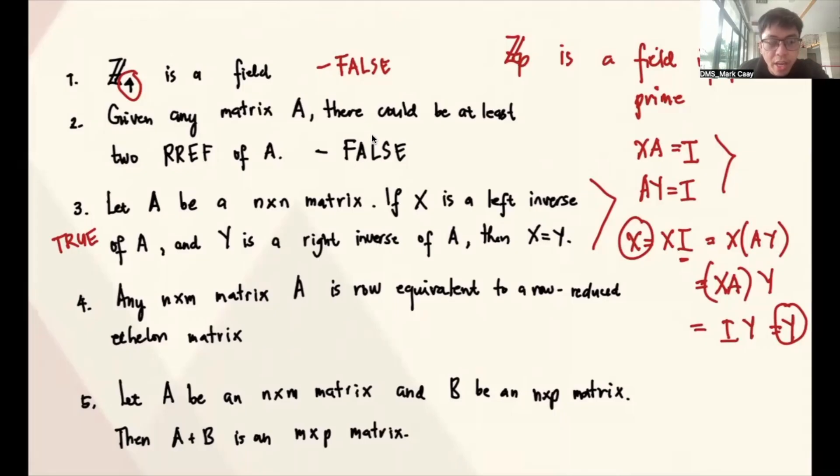Number four, any N by M matrix A is row equivalent to a row reduced echelon matrix. We have this result already, and this is true. It means by applying those major operations, like I said, you can swap two rows, you can multiply a row by a scalar, and you can add a row by a multiple of the other row. The operation will give you the idea that every matrix would have the RREF. So basically, this is also true.